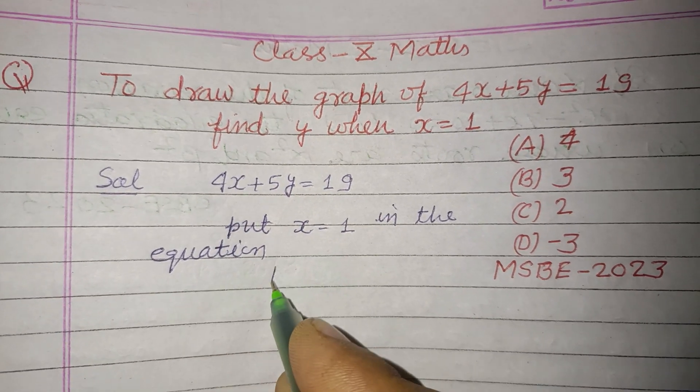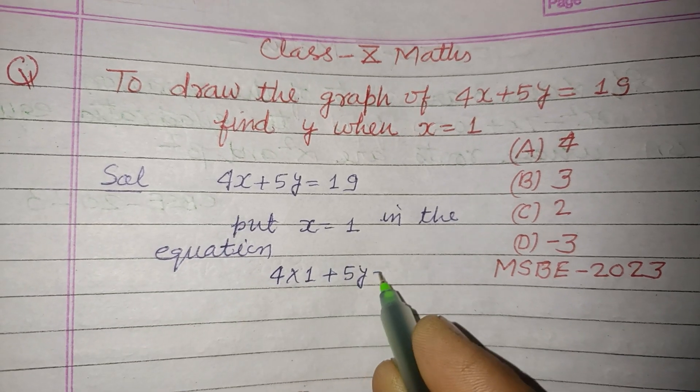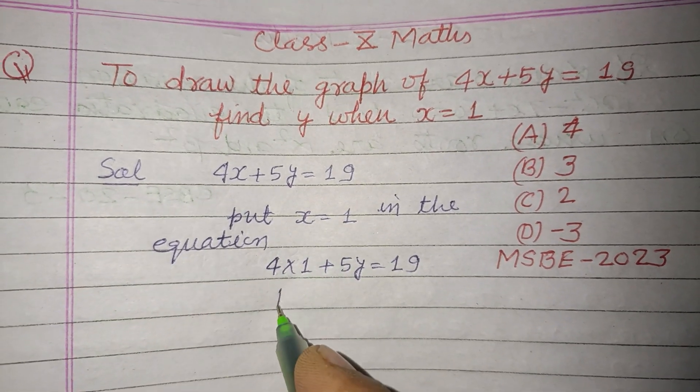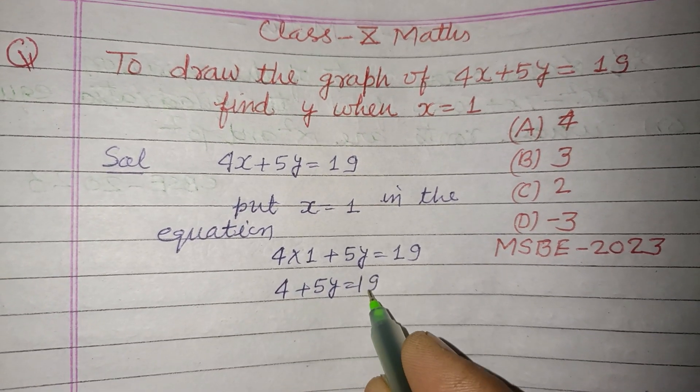We have 4 times 1 plus 5y equal to 19. So this is 4 plus 5y equal to 19.